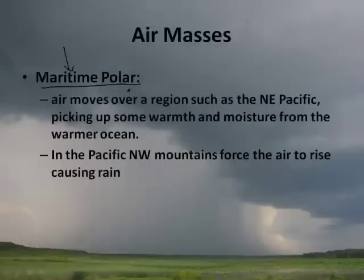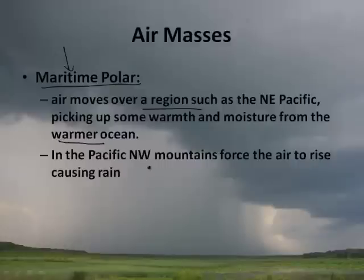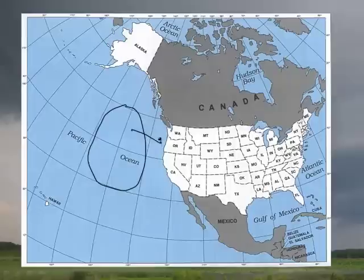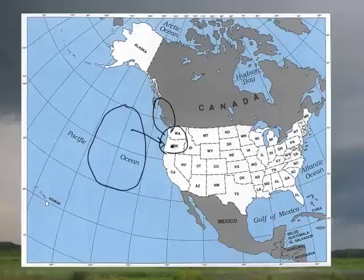Maritime polar air — maritime meaning ocean — moves over regions such as the Northeast Pacific, picking up warmth and moisture from the warmer ocean. This drives the weather of the Pacific Northwest. The air mass forms off the Pacific Ocean and slams into Washington, Oregon, and northern Canada. That's why the Pacific Northwest is extremely green — it's essentially a cold rain forest, one of the wettest parts of the world, unlike the tropical rain forests of South America.